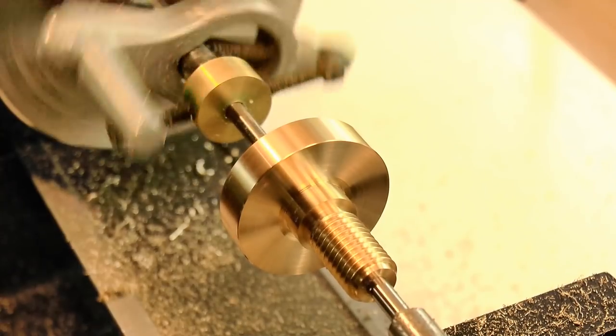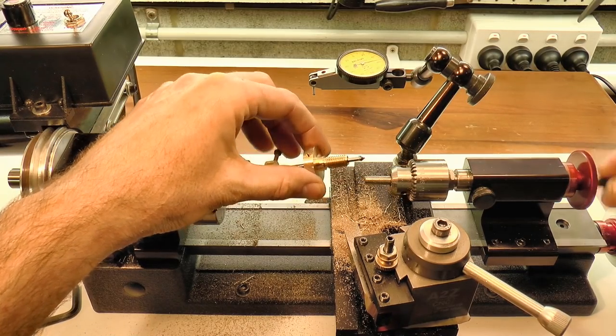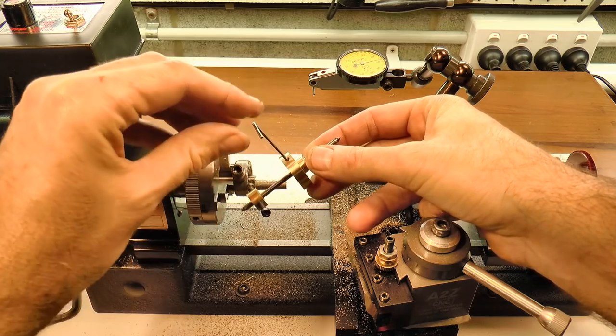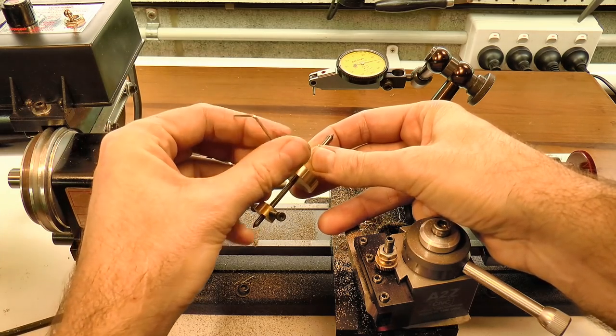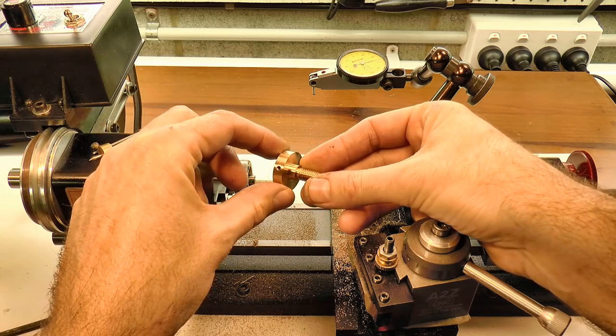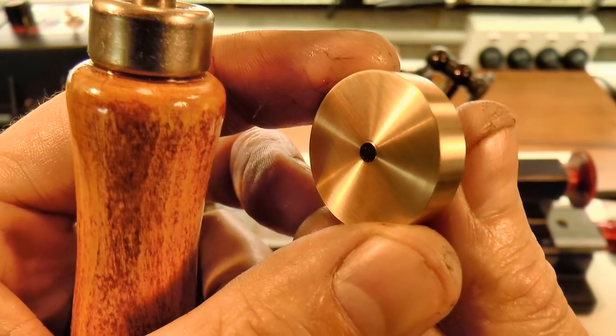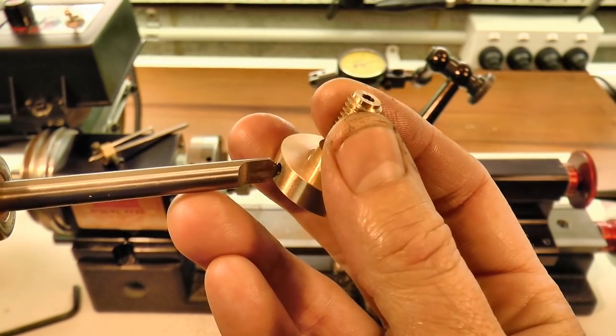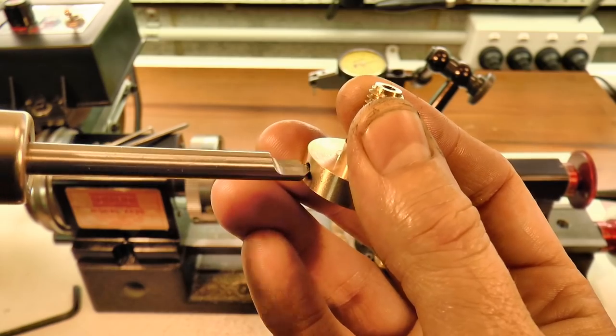The corners were lightly broken with a file, and all that's really required now, is to give each of the holes a light deburr with a countersink. And that's the carrier bolts done.